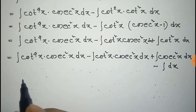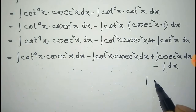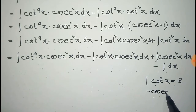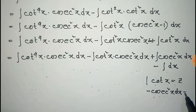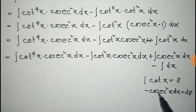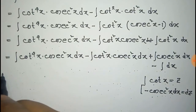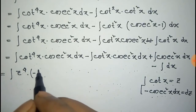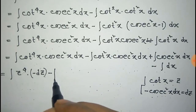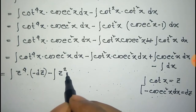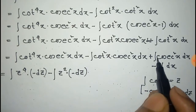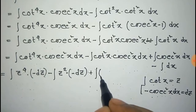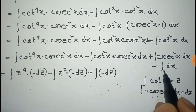Now consider cot x equal to z. The derivative gives minus cosec square x dx equal to dz. Substituting this condition into our integration, we get z to the power of 4 times minus dz, plus z squared times minus dz, minus the integration of dx.